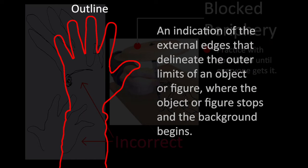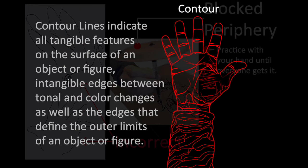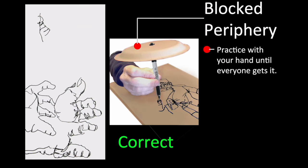Let's cover this again. Here's a hand. That's an outline where you only consider the edge that separates the whole hand from the negative space around it versus a contour. This is not a blind contour, I'm just talking about the concept of edges here.